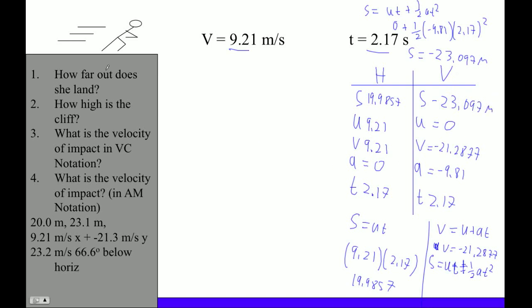Okay, so let's see which ones we've answered. How far out does she land? Well, that's a horizontal thing. So there's the answer, about 19.9857. We have three sig figs, so we've got to round it there. So we'd have to say 20.0 meters, which is our answer there. How high is the cliff? Well, we went down from the top. That's what this means, 23.1 meters. So the height of the cliff must be 23.1 meters.